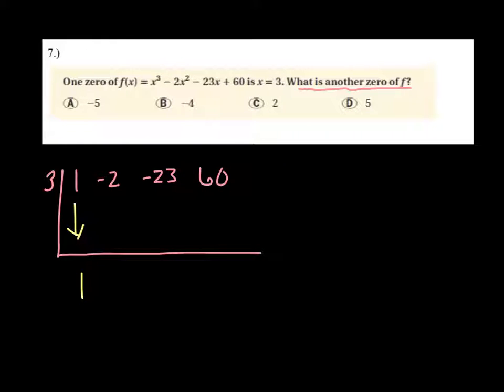Bring down the 1, 3 times 1 is 3, add you get 1, 3 times 1 is 3. Get negative 20, and 3 times negative 20 is negative 60. So we do get a remainder of 0, so that is good. Remember, negative 20 is your constant, and then we have x squared and x.